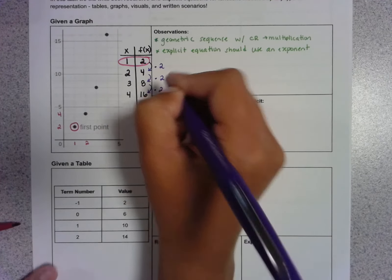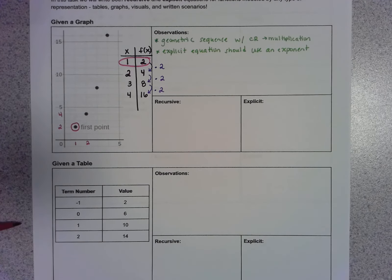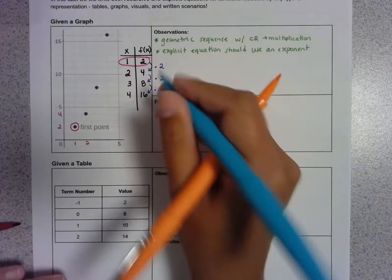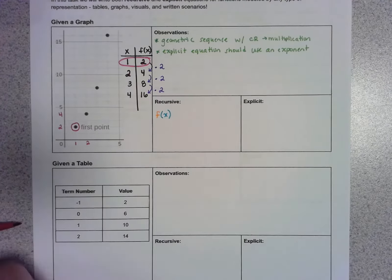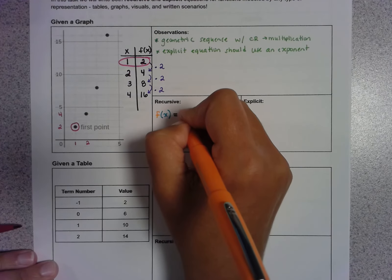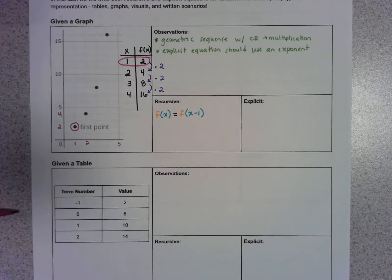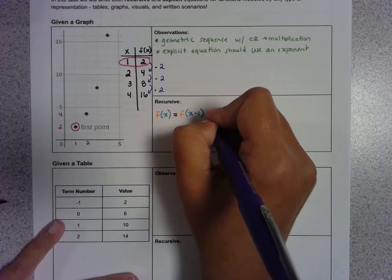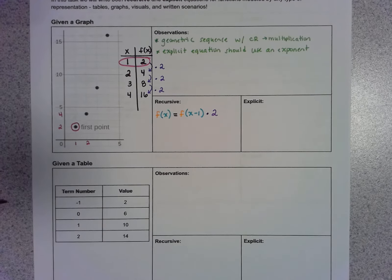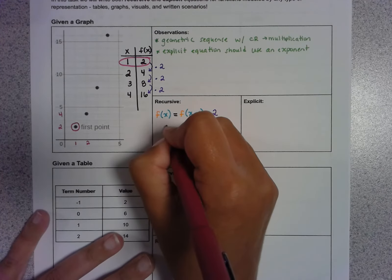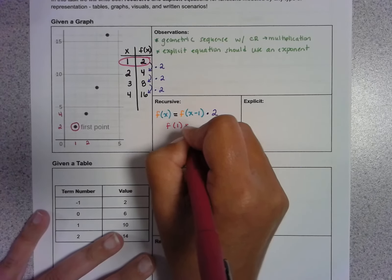Whenever you see a graph, make a table if you don't already have one, so you can really look at the numbers you're working with. A recursive equation always starts like this: f(x) = f(x − 1). The current output equals the previous output, then times 2 for the pattern — and we always see the pattern at the end of a recursive equation. A recursive equation also needs to specify the starting value: f(1) = 2.